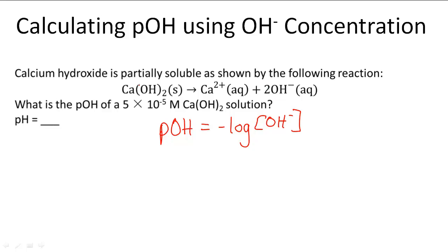To figure this out, we know that we have a 5 times 10 to the negative 5th molar concentration of calcium hydroxide. We know that for every mole of this we're going to produce 2 moles of the hydroxide ion. So all we have to do is multiply this by 2 to get the concentration for 2OH negative.